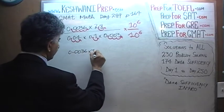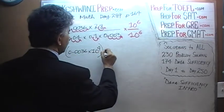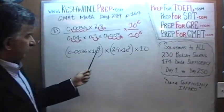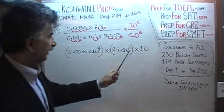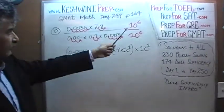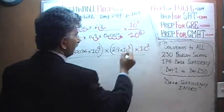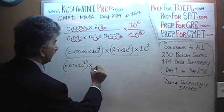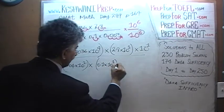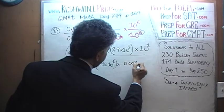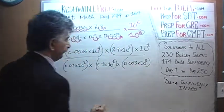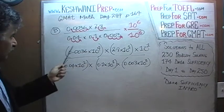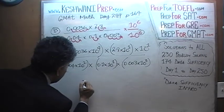So on the top we have: 0.0036 times 10 to the 4, times 2.8 times 10 to the 1, times 10. On the bottom: 0.04 times 10 squared, times 0.01 times 10 to the 1, times 0.003 times 10 to the 3. This gives us top: 36 times 28 times 10. Bottom: 4 times 1 times 3.